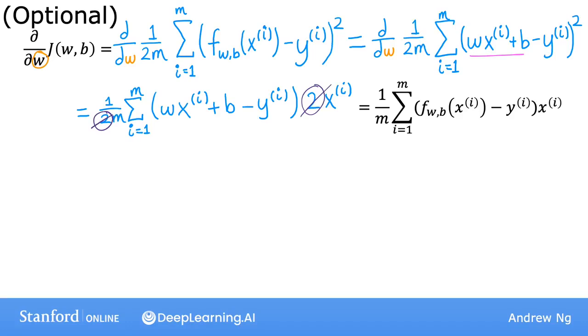So this, by the way, is why we had to define the cost function with the one-half earlier this week. It is because it makes the partial derivative neater. It cancels out the 2 that appears from computing the derivative.